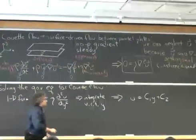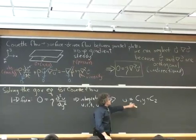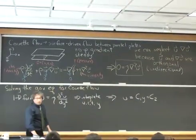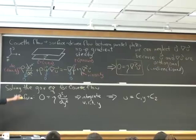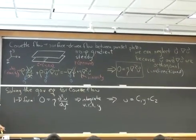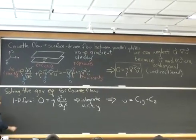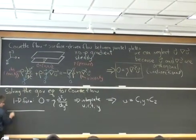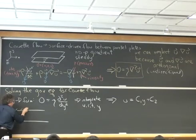What this integration tells me is that this velocity is basically given by a linear distribution. In my original form of this depiction, I said that there was a surface-driven flow, but I actually never specified what the boundary conditions are. So let's do that now.